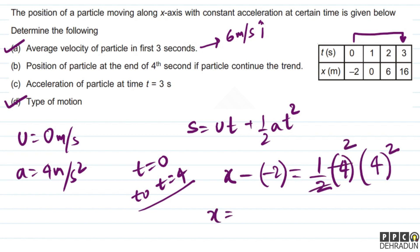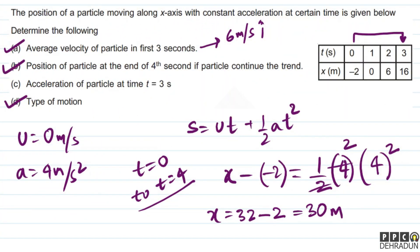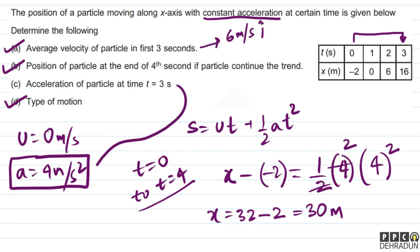Solving: x + 2 = ½ × 4 × 16 = 32, so x = 32 − 2 = 30 meters. That's the answer for Part B. For Part C — acceleration at t=3 seconds — since acceleration is constant throughout, it remains 4 m/s² along the positive x-axis.